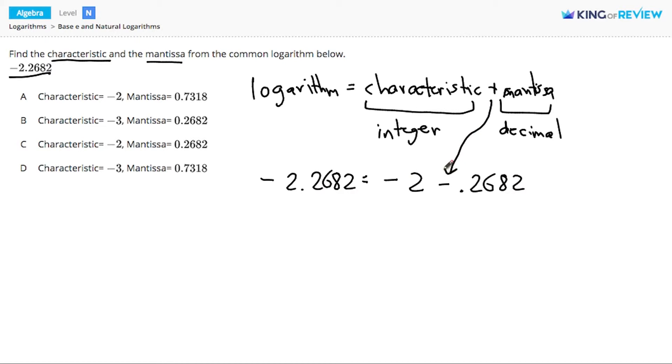We want our mantissa to be positive. So we add 1 to the mantissa and subtract 1 from the characteristic to balance it out. Negative 2 minus 1 is negative 3. That's still an integer, so it can still be the characteristic. And if we do negative 0.2682 plus 1, we get positive 0.7318. This is a sum that works for a characteristic and a mantissa because the mantissa is positive.